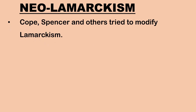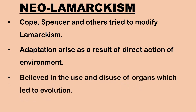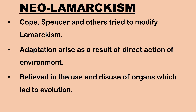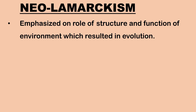Neo-Lamarckism is the theory of evolution based on Lamarckism, supporting the concept that acquired characters are inherited. Cope, Spencer and other followers of Lamarck tried to modify Lamarckism. According to them, adaptation arises as a result of direct action of the environment. The development of fur on the skin of animals protects them against cold weather, but if the climatic conditions return to normal, the fur would also disappear. They believed in the effect of use and disuse of organs on evolution and emphasized on the role of structure and function of environment in evolution.